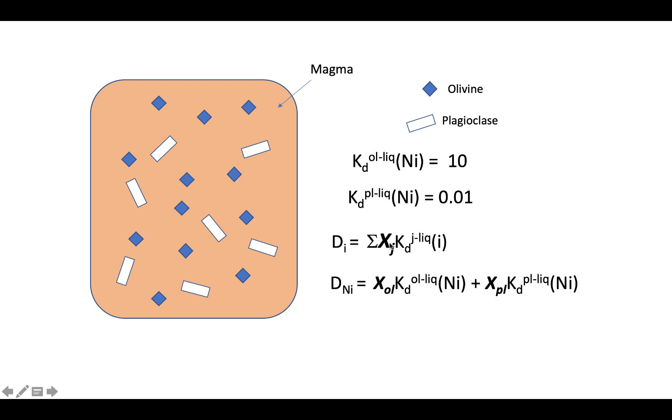Here's that equation we looked at earlier, but now we can break it out into its various parts. This summation just says ahead of time we don't know how many phases we might have in the system. But in our particular case, we do know. We have two phases, olivine and plagioclase. So we can drop the summation sign and just talk about the Xj for olivine, the amount of olivine that we have, and then the Kd for olivine, and then the Xj for plagioclase, the amount of plagioclase that we have multiplied by the partition coefficient.